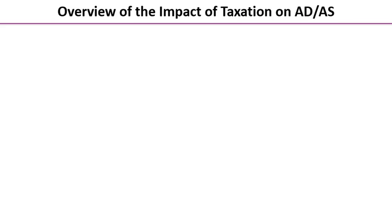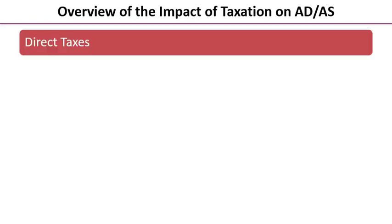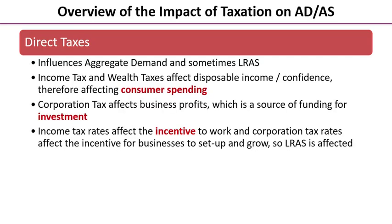The flip side of the fiscal policy coin is taxation. I'm going to break it down into direct tax and indirect tax. Direct taxes can influence aggregate demand and they can sometimes influence long-run aggregate supply. Let's start by looking at income tax and wealth taxes such as capital gains tax or inheritance tax.